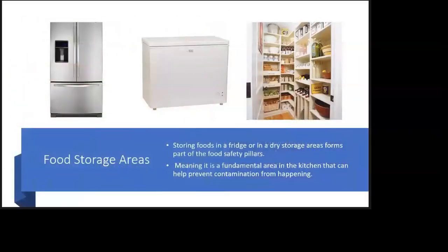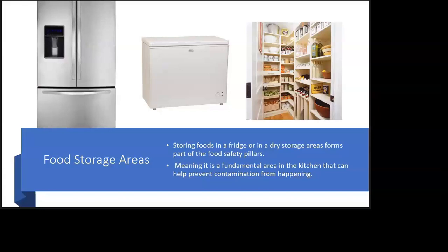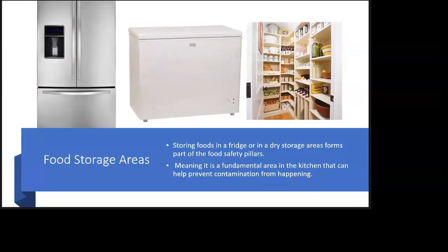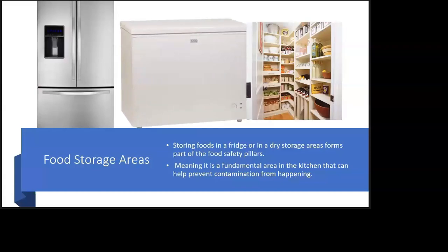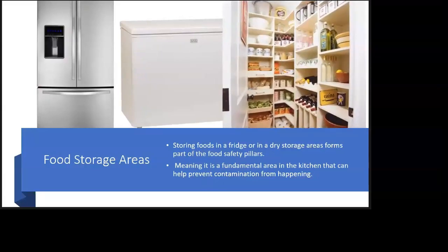There are three food storage areas we must be mindful of. Storing food in a fridge or in a dry storage area forms part of the food safety pillars — it is a fundamental area in the kitchen that can help prevent contamination. Your refrigerator acts as a form of preservation. Your freezer lengthens the shelf life of food products. And you have your pantry or cupboards for jars and bottles in a dry, cool area free from pests.